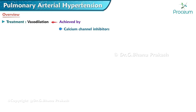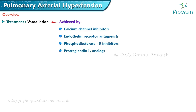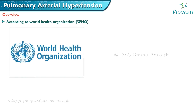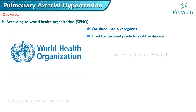The mainstay of treatment for pulmonary arterial hypertension is vasodilation, which can be achieved mainly by calcium channel inhibitors, endothelin receptor antagonists, phosphodiesterase 5 inhibitors, and prostaglandin I2 analogs. Warfarin is given to all patients with pulmonary arterial hypertension. The World Health Organization has functionally classified pulmonary hypertension into four categories, which are widely used as survival predictors.